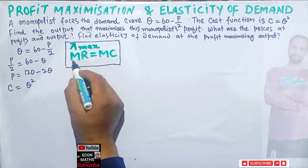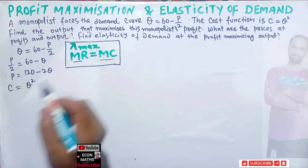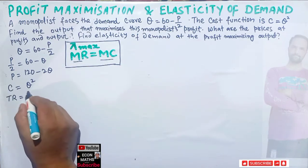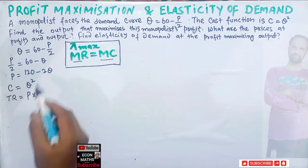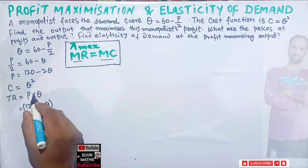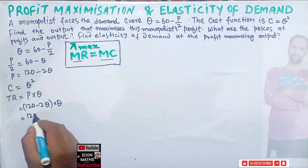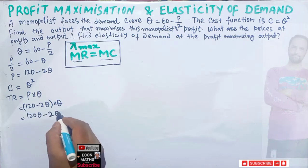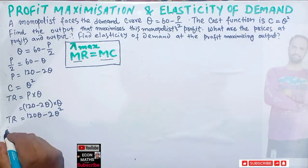We have the inverse demand function, so first we need to find total revenue to get marginal revenue. Total revenue is simply price multiplied by quantity. The price function is our inverse demand function, 120 - 2q, multiplied by q. This gives us total revenue = 120q - 2q².